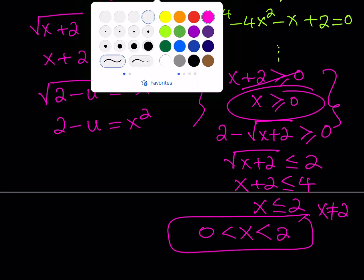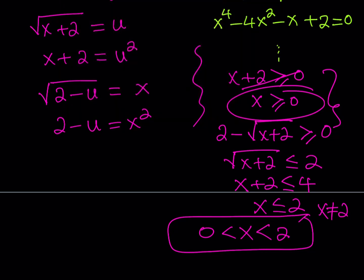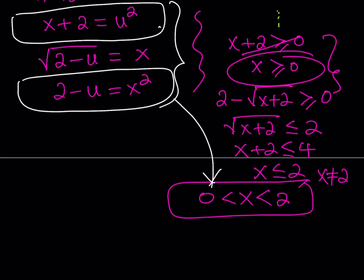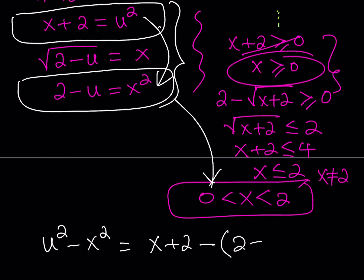Now in order to solve this, I'm going to take the two equations from the substitution and always keep the domain inequality in mind. How do you solve this system? Well, I see u squared and x squared. I can just go ahead and subtract them. I'll get u squared minus x squared on the right-hand side, and on the left-hand side I subtract x plus 2 minus the quantity 2 minus u. This is going to give us something interesting.